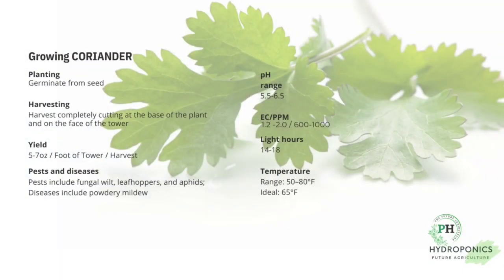Growing coriander. I have to fix the seeds and grow. pH values are 5.5 to 6.5. I have to fix the EC 1.2 to 2.0.